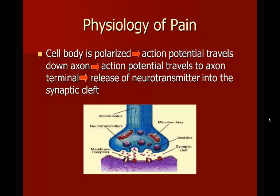When the cell body is polarized, the action potential travels down the axon to the axon terminal, and the neurotransmitter is released into the synaptic cleft. That electrical impulse triggers the release of a chemical into that space. The dendrites of the next nerve cell have little receptors on them, and as these chemicals bind to the receptors, they either continue that electrical impulse or stop it.